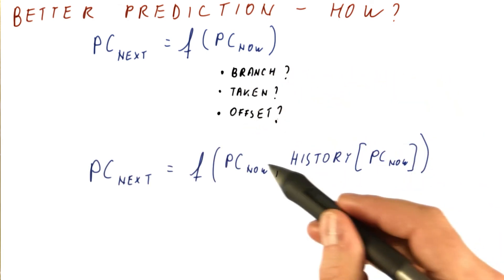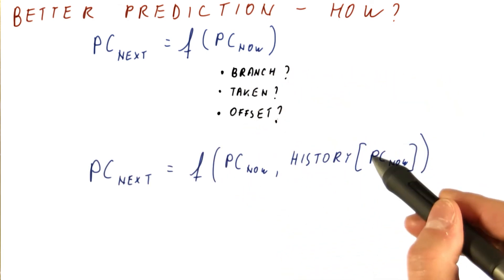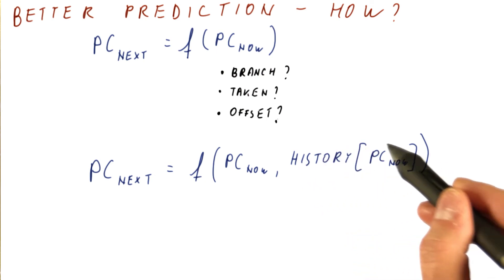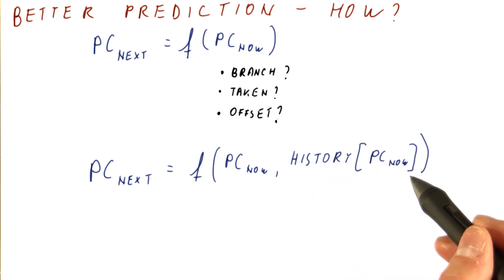What we do know is what the current PC is, but we also know something about how that branch at this PC was behaving in the past. And we can use that because it turns out that branches tend to behave the same way over and over again.